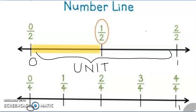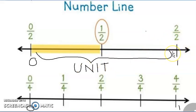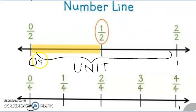Now, on a number line, as you can see, from 0, when we start plotting from 0 to the number 1, this is actually one single unit. From 0 to number 1 is always one single unit. From 1 to 2, again it will be another unit. So mainly, when we have proper fractions, all the proper fractions will lie in one single unit.